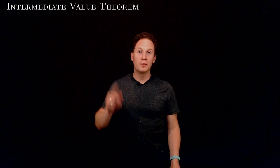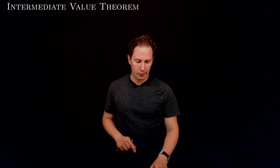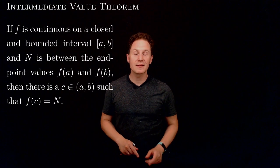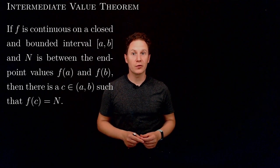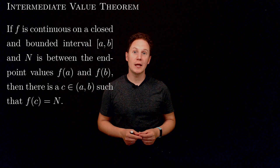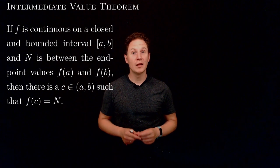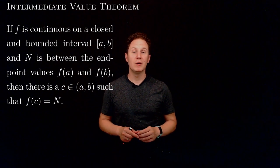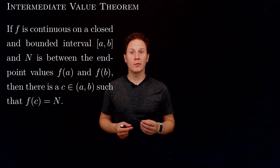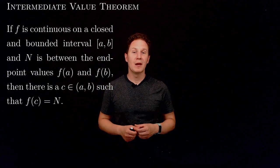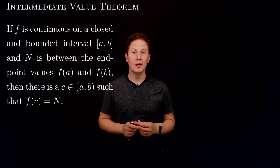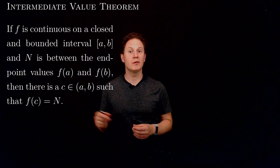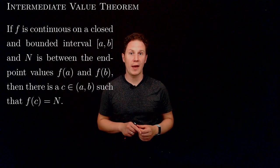This video is about the Intermediate Value Theorem, which states that if we have a function f that is continuous on a closed and bounded interval [a, b], and n is a number between the endpoint values f(a) and f(b), then there exists a point c between a and b at which the function takes on this intermediate value n.